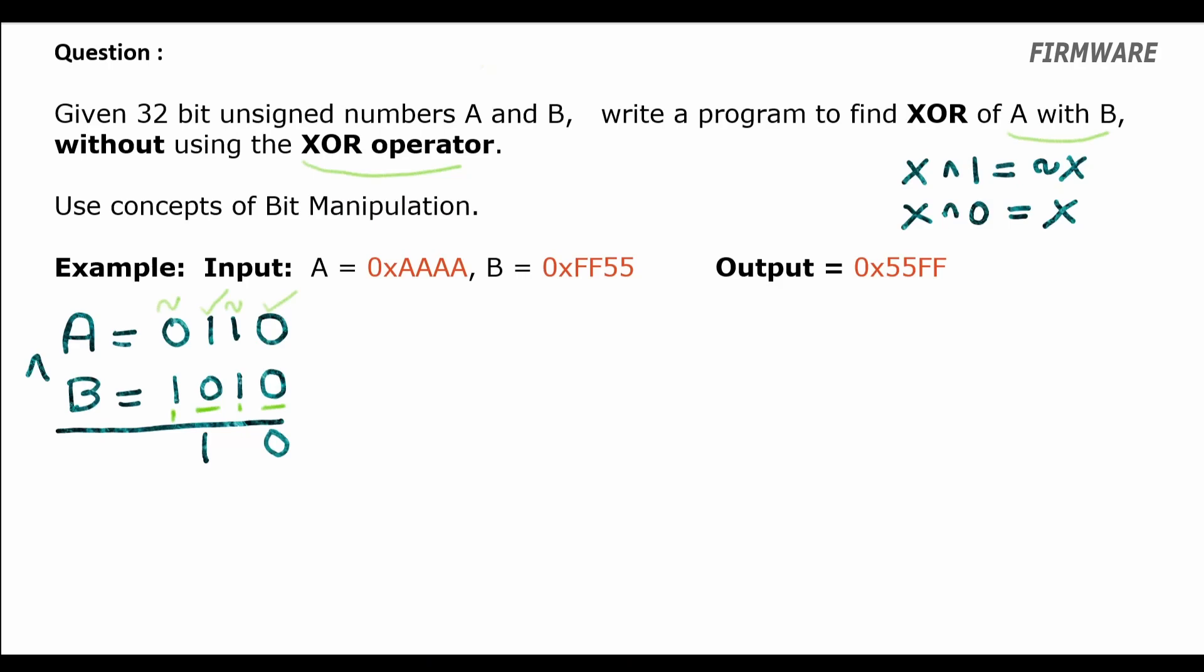Now in the positions where the bits in B are 1, that is the second bit from LSB and the fourth bit, the XOR result will have inverted bits of A in those positions. Okay, so now we have two sets of bits in the result. The first set has the inverted version of bits in A which are in the positions where bits in B are 1. The second set has the bits which are the same as that in A and they are in the positions where bits in B are 0.